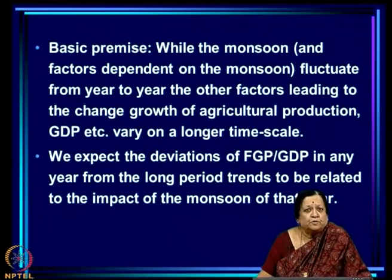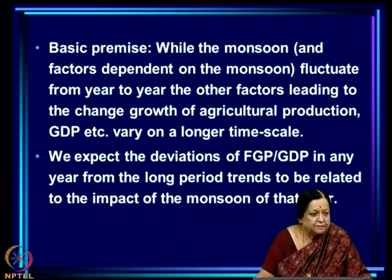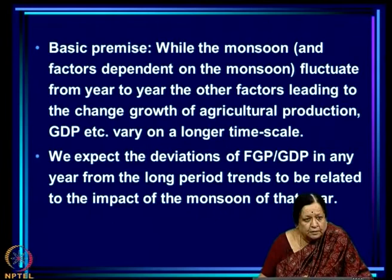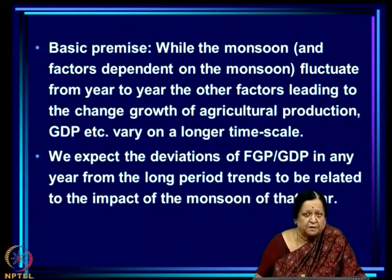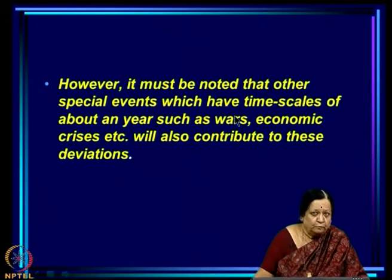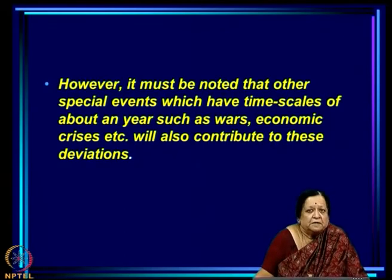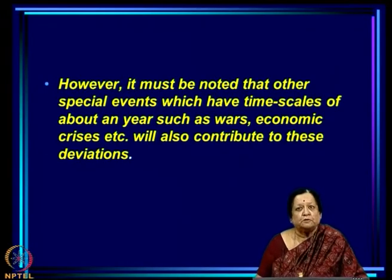How do we quantitatively assess the impact of monsoon on food grain production or GDP? While the monsoon and factors dependent on it fluctuate year to year, other factors leading to changes in agricultural production and GDP vary on much longer time scales — we have seen sustained growth of GDP from the 1950s to now on a timescale of decades. So we expect deviations from this long-term trend to be related to the impact of the monsoon of that year. However, other special events with timescales of about a year — such as wars and economic crises — will also contribute to these deviations.